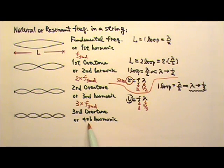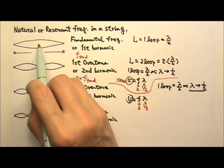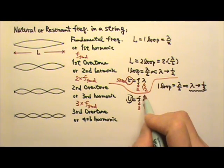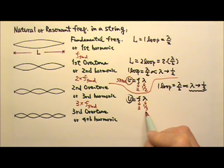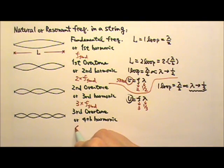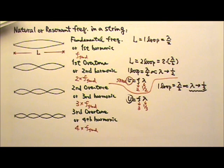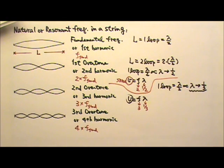Of course, for the fourth harmonic, the length of a loop is one-fourth that of the fundamental, so the wavelength changes by a factor of one-fourth, and the frequency must quadruple. So the fourth harmonic must be four times the fundamental frequency. And the fifth harmonic will be five times the fundamental frequency. So the nth harmonic with n loops must have a frequency that is n times the fundamental frequency.